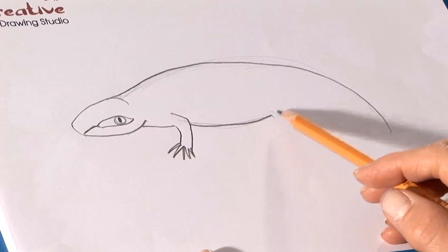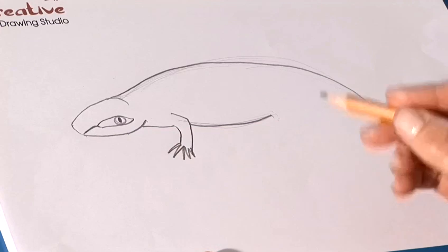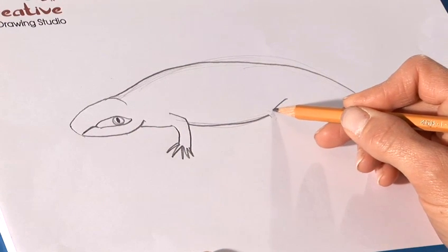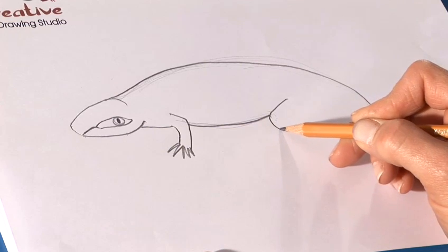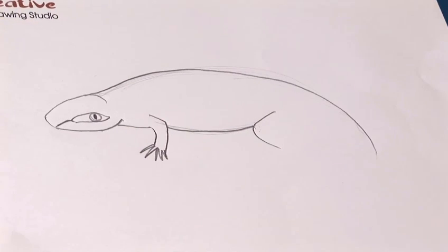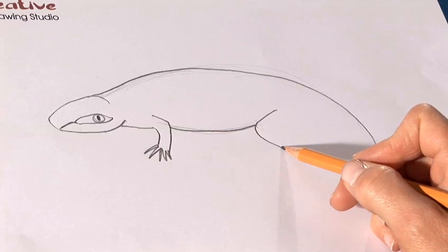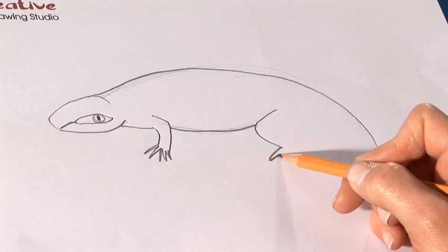And we'll leave room for the back leg now by putting in a curvy line touching here for a knee like this. Let's draw some lizard claws here.